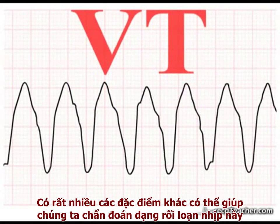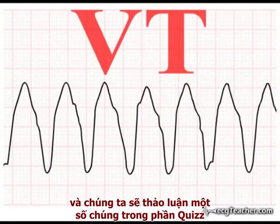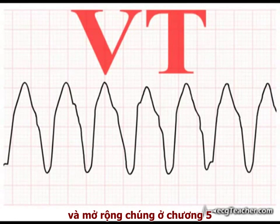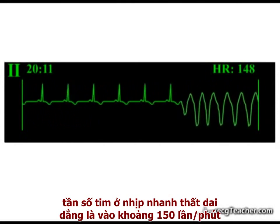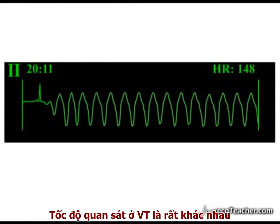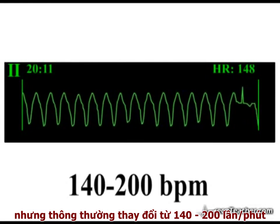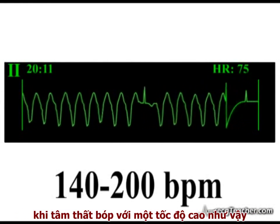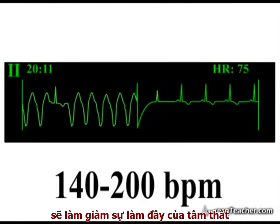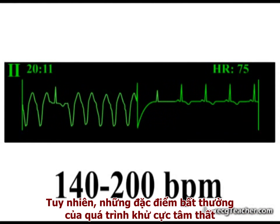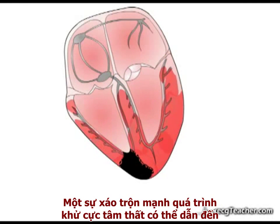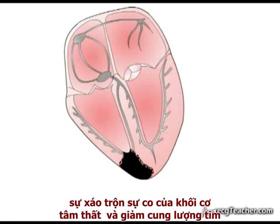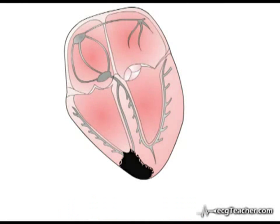Evidence of AV dissociation is detectable in approximately 50% of cases of ventricular tachycardia. There are many other features which help in the diagnosis of this arrhythmia, and we will discuss some of these in the quiz section and expand on this in section 5. Our patient experienced a run of sustained VT at approximately 150 beats per minute. The rate observed in VT is variable but most commonly runs between 140 and 200 beats per minute. The high rates achieved in this arrhythmia and impaired ventricular filling are part of the reason why it is so dangerous. However, the highly abnormal pattern of ventricular depolarization is also a major contributor to cardiovascular instability, as a highly deranged pattern of ventricular depolarization may result in an equally deranged pattern of ventricular myocardial contraction with loss of cardiac output.